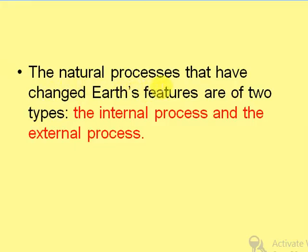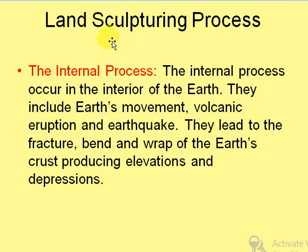The natural processes that have changed our Earth's surface features are of two types: internal processes and external processes. These land sculpturing processes — first we will discuss the internal processes. The internal processes occur in the interior of the earth. They include earth's movement, volcanic eruptions, and earthquakes. They lead to the fracture, bending, and warping of the earth's crust, producing elevations and depressions.